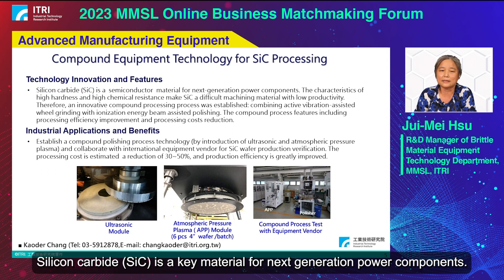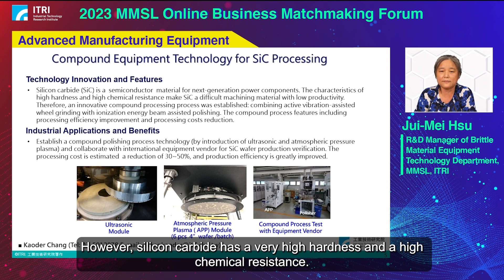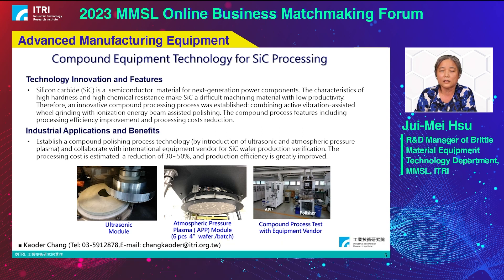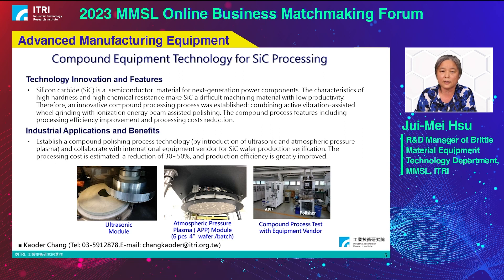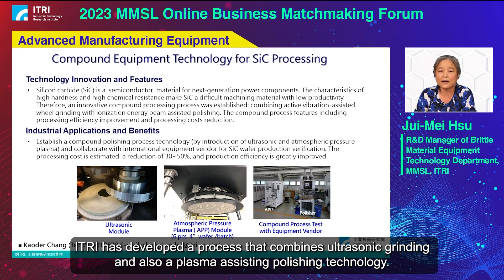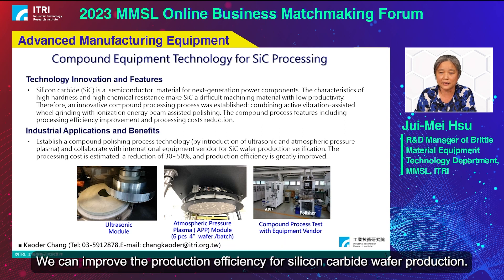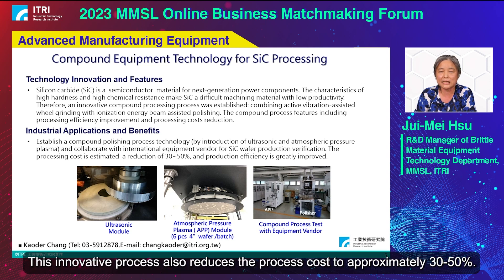Silicon carbide is a key material for next generation power components. However, silicon carbide has very high hardness and high chemical resistance, which makes it a very difficult material to machine or polish. E-tree has developed a process that combines ultrasonic grinding and plasma-assisted polishing technology to improve production efficiency for silicon carbide wafer production. This innovative process also reduces the process cost by approximately 30 to 50%.